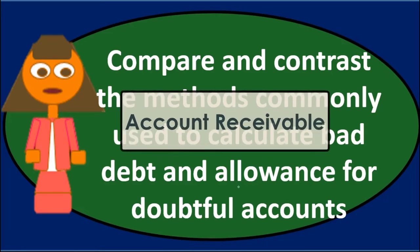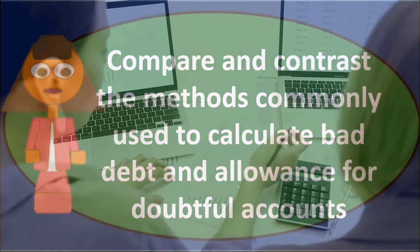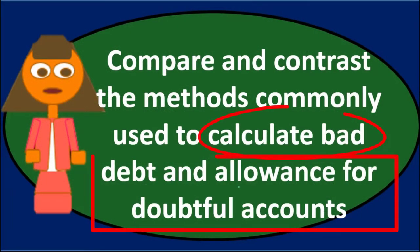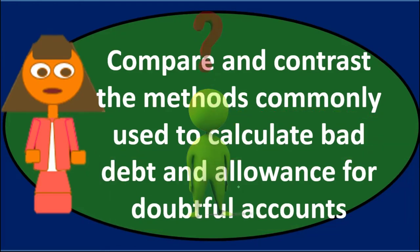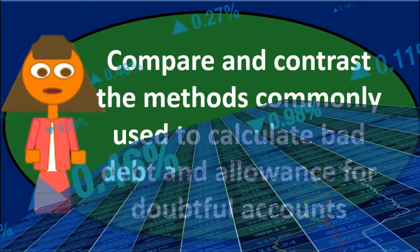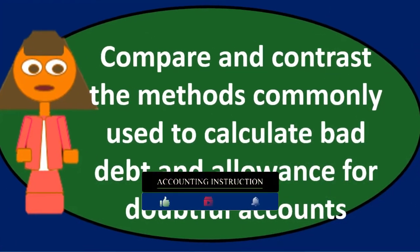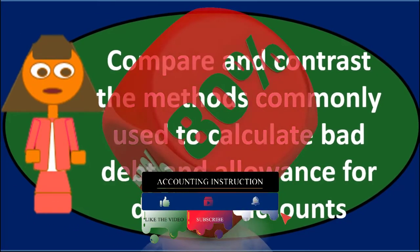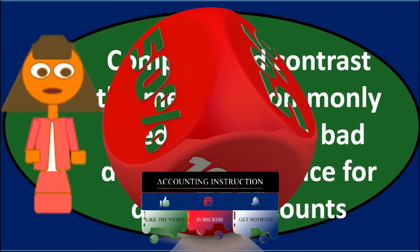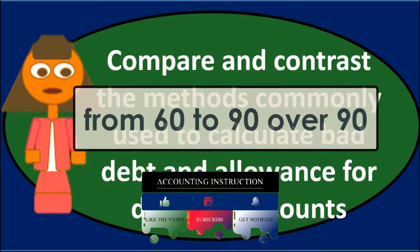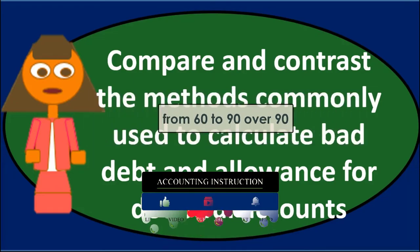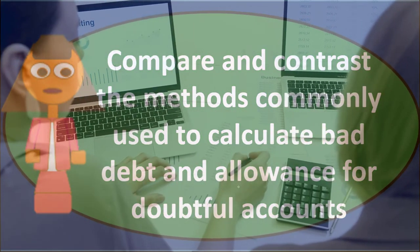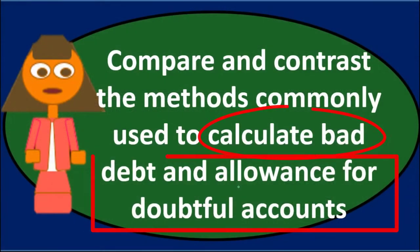The percentage of accounts receivable method involves looking at accounts receivable — possibly through an aging schedule — by listing accounts by how old they are. You then use industry standards and past experience to estimate how much is uncollectible. For example, you might apply a certain percentage to accounts past due by 30 days, a higher percentage for 30–60 days, and even higher for 60–90 days and over 90 days.